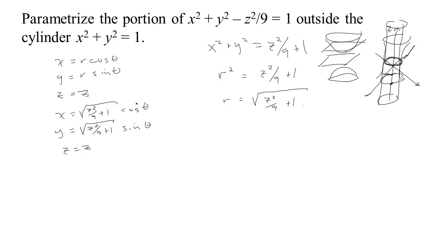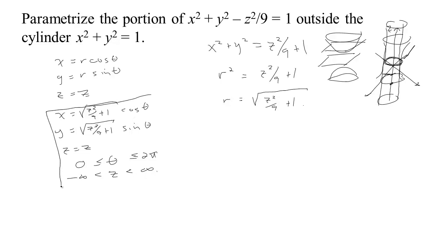You could change the names of the inputs to u and v or whatever you wanted — it's just a matter of what you call them. We need bounds on z and theta. Theta goes between 0 and 2 pi. Z is really unbounded since the whole hyperboloid is outside of the cylinder, so there are no requirements on z — z just goes from negative infinity to infinity. So we were able to come up with our parametrization, complete with bounds on the parameters and equations that give your location x, y, and z from those two parameters.